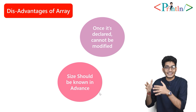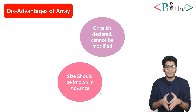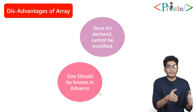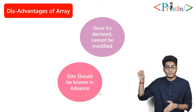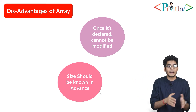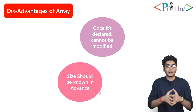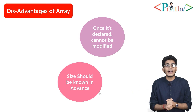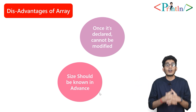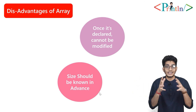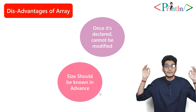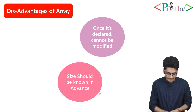Once declared, the size cannot be modified. If you declared an array using malloc, you can free that memory or use realloc to extend it. But for a normal static array, you cannot extend the size or deallocate the memory — it remains static.